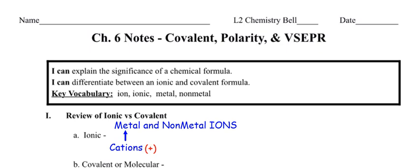Here's my joke: lithium walks up to the bartender and says, 'Help, help, I lost an electron!' 'Are you sure?' 'I'm positive!' So your metals are your cations — your positively charged ions. Now your non-metals are your anions. I'm enunciating the N's in non-metals and anions because those are your negative ions.